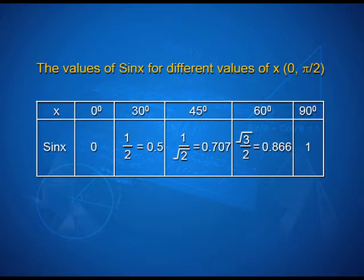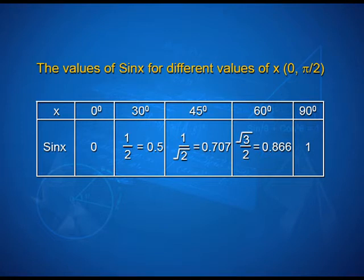Sine 0° = 0. Sine 30° = 1/2, that is 0.5. Sine 45° = 1/√2, which can be simplified as 0.707. Sine 60° = √3/2, which on simplification gives 0.866, and sin 90° = 1.